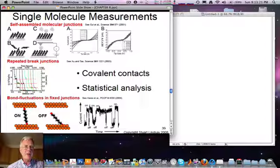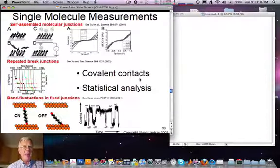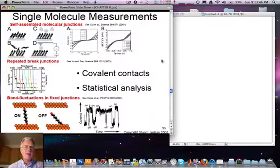The result being this so-called telegraph noise in the current signal. All of these techniques have in common two important features. One is the use of covalent contacts to displace contamination and interfering molecules in the gap between the metal electrode and the molecule. And the second is statistical analysis of the data, because single molecule junctions are inherently subject to fluctuations.